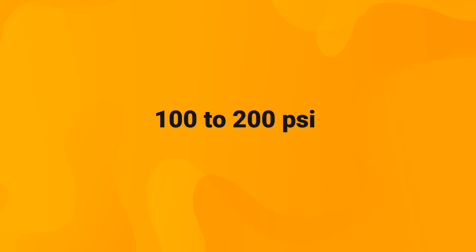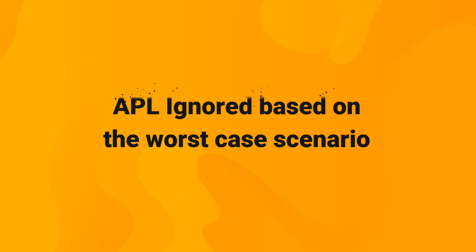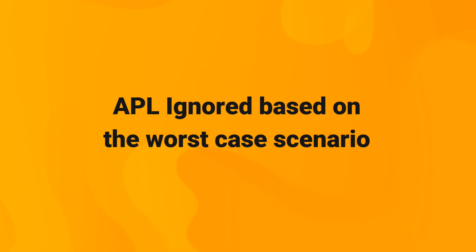A common overbalance value in the oil and gas industry ranges from 100 to 200 psi, though it can be higher or lower based on each specific case. Question number two: why does the previous equation ignore the effect of APL? This is because it's the right decision to assume the worst-case scenario in well control to eliminate any risks. The worst case in normal drilling operations is when circulation is stopped, causing APL to decrease to zero — that's why it is ignored in the equation.